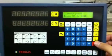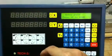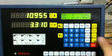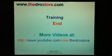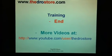To escape from the parameter setup, you can either turn off the DRO or you can press the clear key. That's the end of the training. There are more training at YouTube. Thank you.